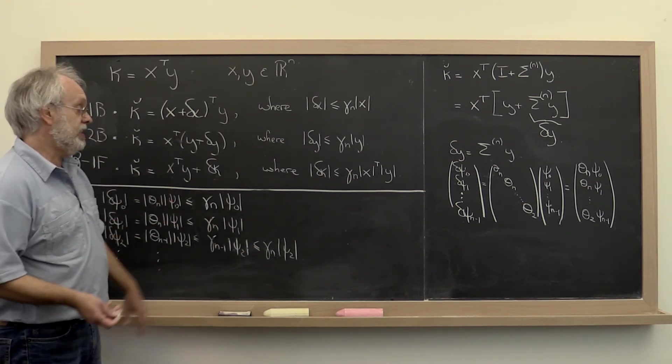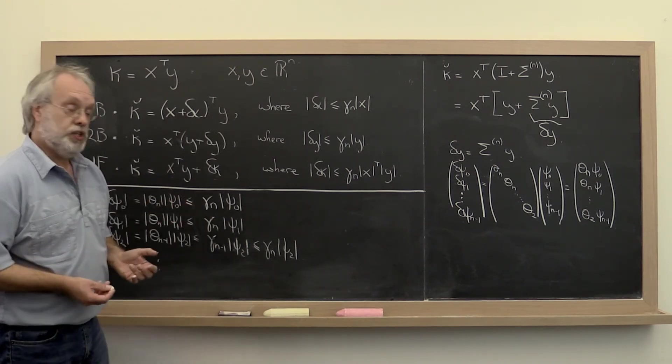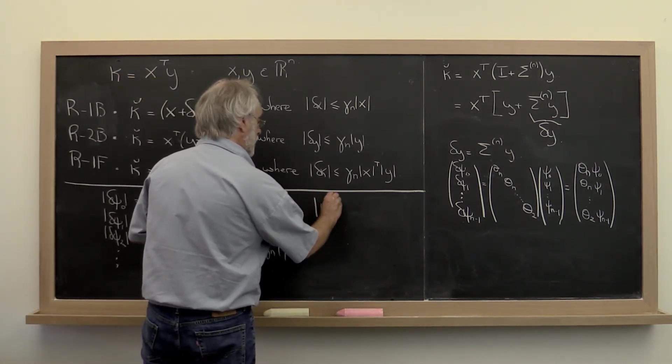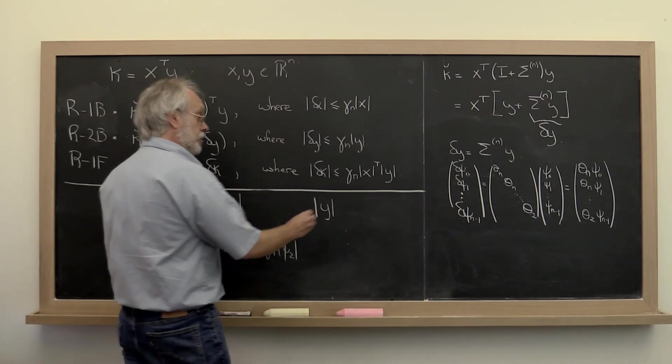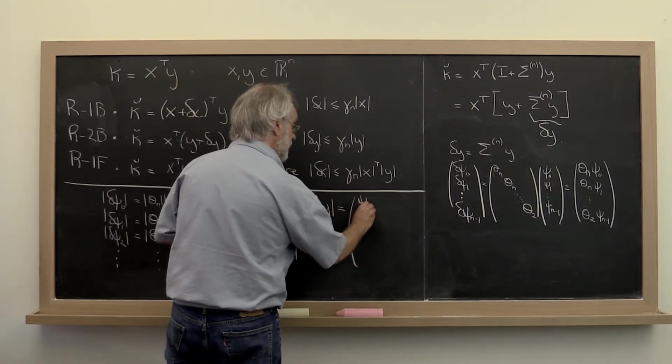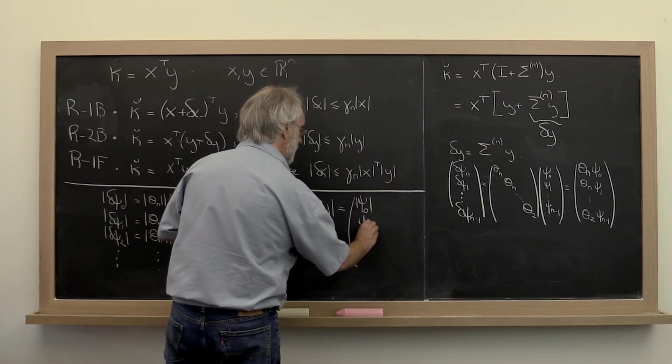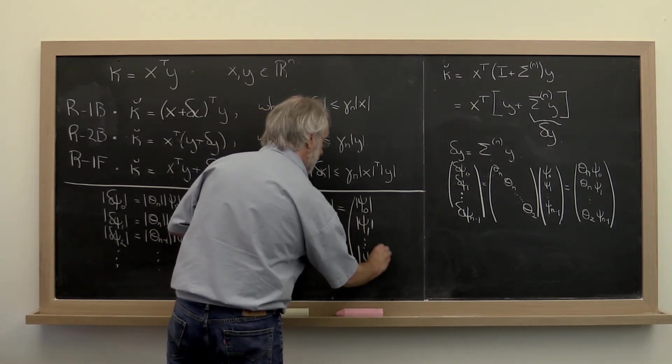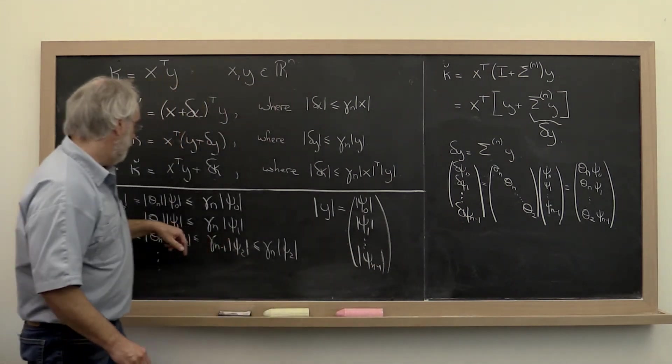Now if we then create a new notation where, given a vector y, we define its absolute value to be the vector of absolute values, then we can very concisely take this observation...